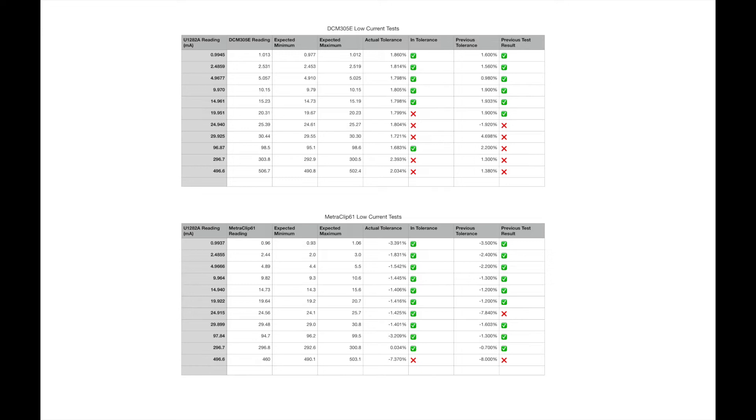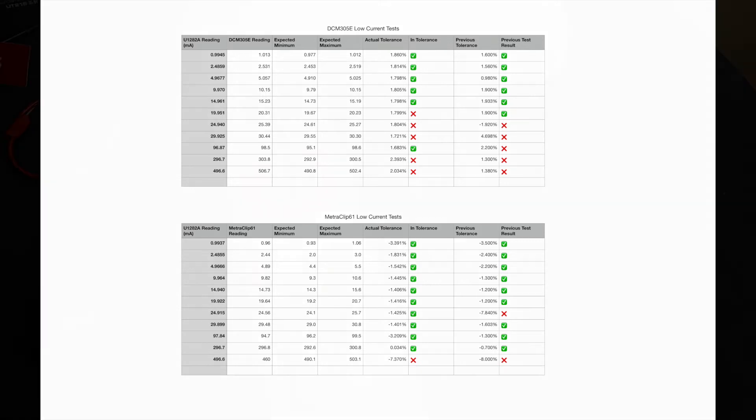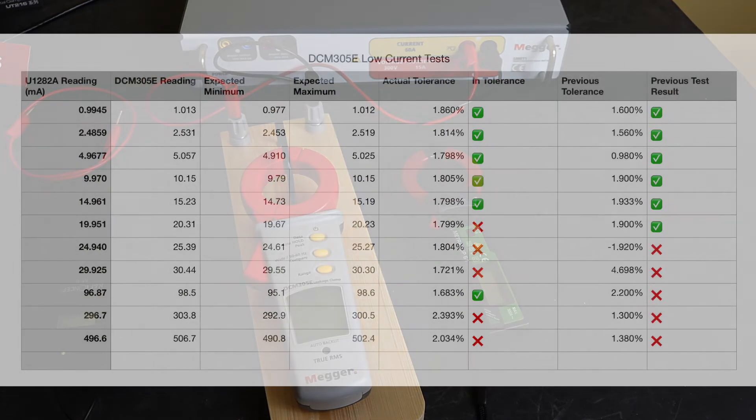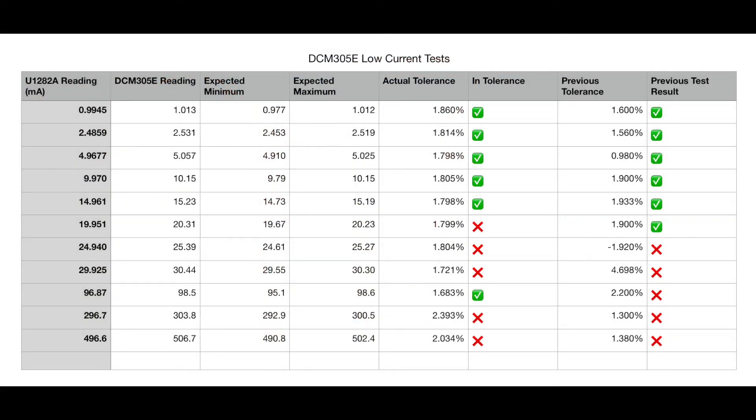Previous test result shows the measurements I made in the last video. Looking at the DCM305E more closely, you can see the actual result, overall result is pretty much similar. I've got five readings that are out of tolerance. The difference this time around is that the 100 milliamp I've now got in tolerance, but I got an out of tolerance reading on the 20 milliamp reading.